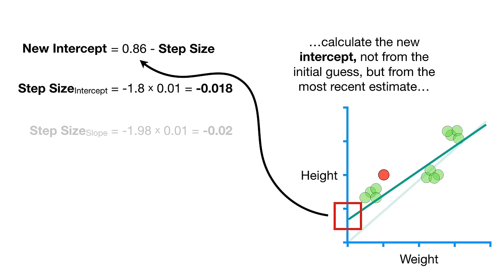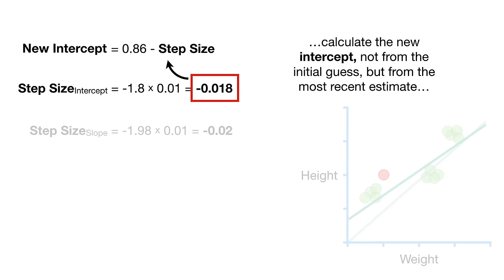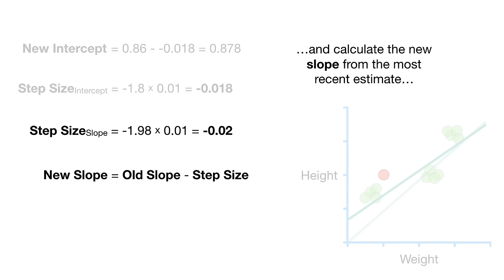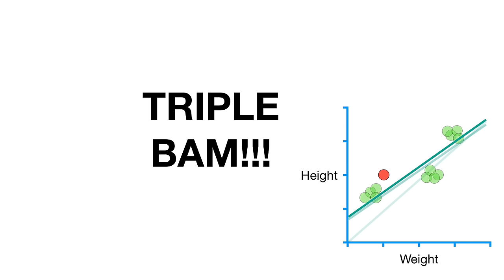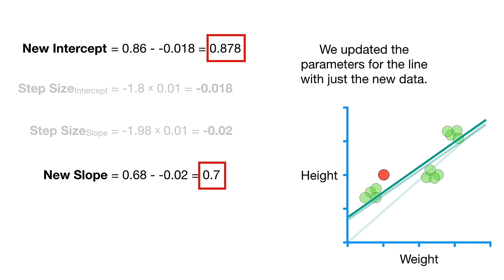Calculate the new intercept, not from the initial guess, but from the most recent estimate, and calculate the new slope from the most recent estimate. And the new line has intercept equals 0.878 and slope equals 0.7. Triple BAM! We updated the parameters for the line with just the new data.